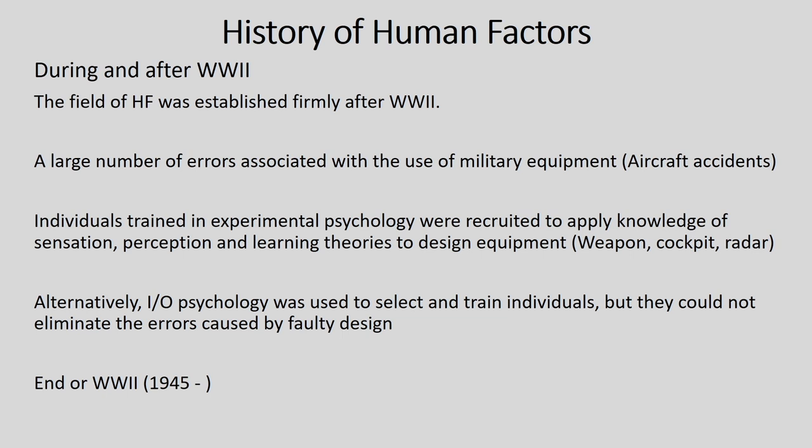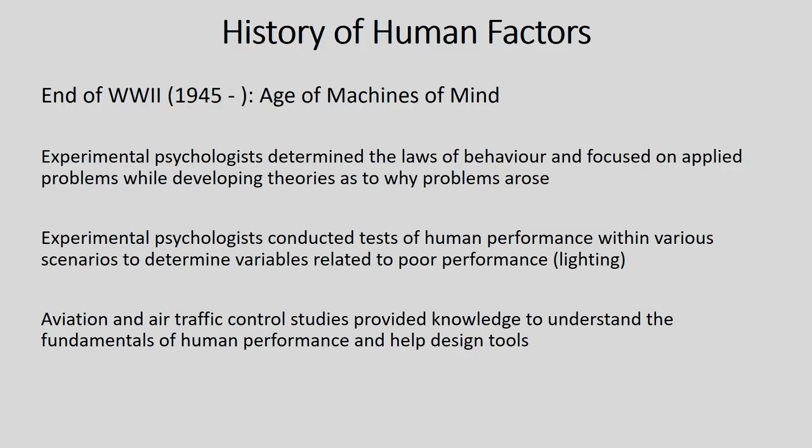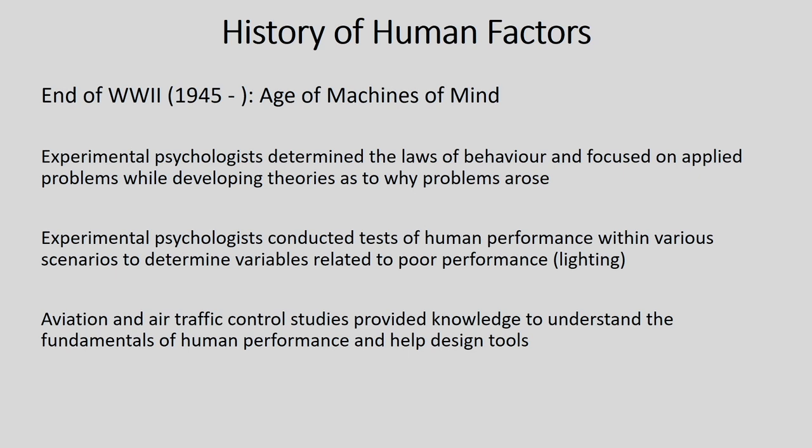From 1945 to the present is the third stage of the history of engineering psychology, called the age of machines of mind. The focus of this era was not about how machines are designed but rather how minds function. If you study the human mind and the machine in relation to each other, you will have a much more efficient system with higher performance and lower errors and fatigue. In this stage, extensive usage of experimental psychologists took place. These experimental psychologists determined the laws of behavior and used these laws to focus on applied problems while developing theories as to why problems arose.